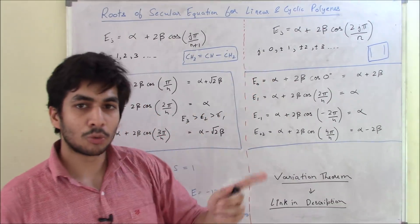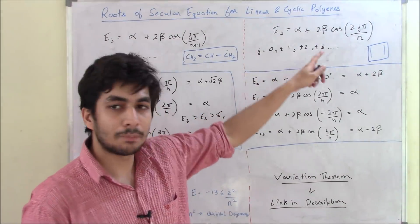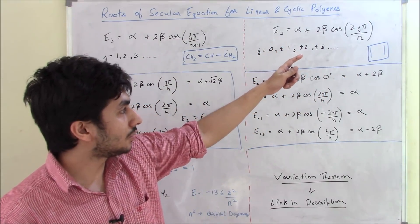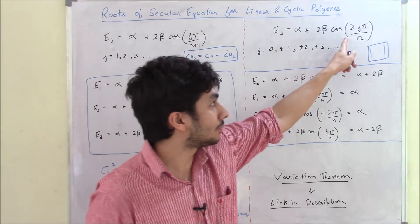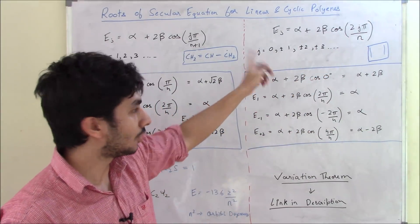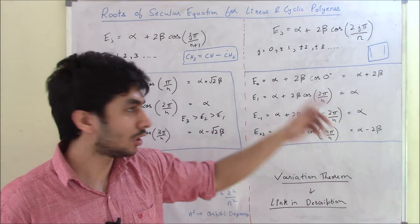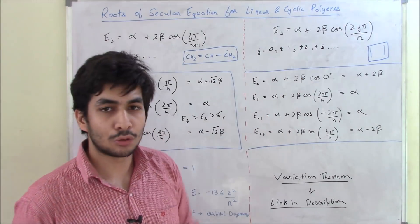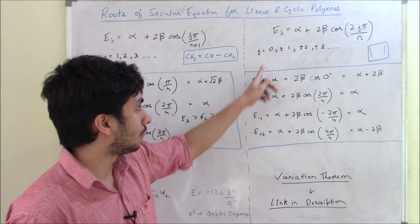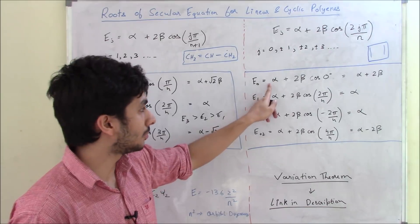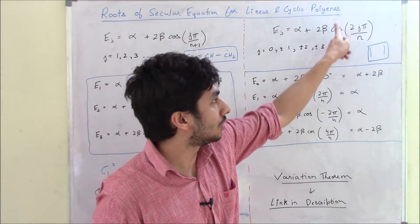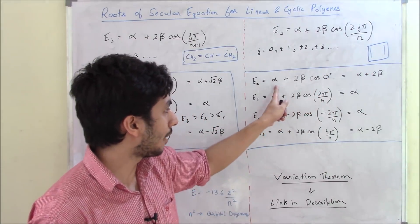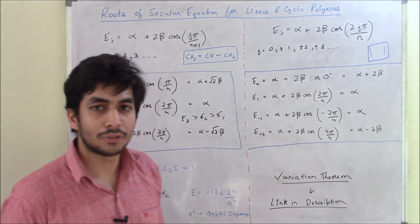Now for cyclic polyenes: the denominator is simply n (not n+1), and the numerator uses 2j. Also, the j values range over 0, ±1, ±2, ±3 and so on. For cyclobutadiene, n = 4. Taking j = 0: E0 = alpha + 2 beta · cos(0) = alpha + 2 beta · 1 = alpha + 2 beta.